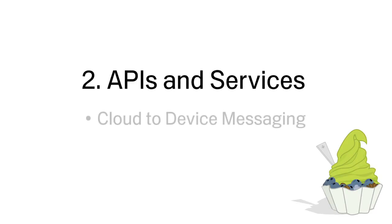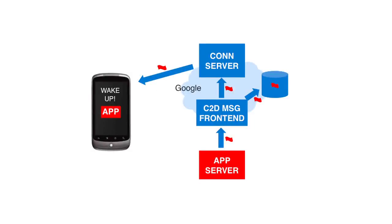Developers can use Android cloud-to-device messaging to easily enable alerts, send to phone, and two-way sync functionality for their apps. With this API, an app server can send authenticated messages to the Google server, which would push the message to the app on a user's device.